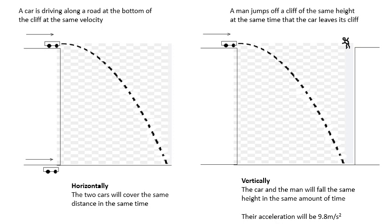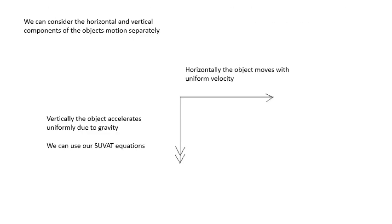Ignoring air resistance. So, you should see that the horizontal and the vertical components of this two-dimensional motion can be considered independently. We can consider the horizontal and vertical components of the object's motions separately. And basically, for a projectile, horizontally, the object will move with uniform velocity.